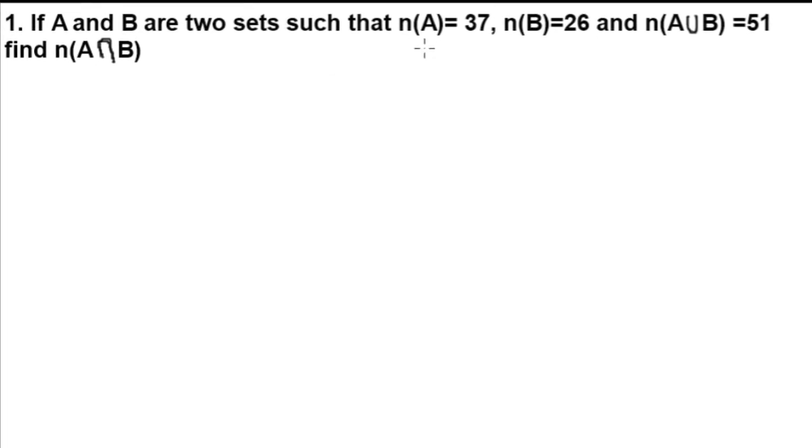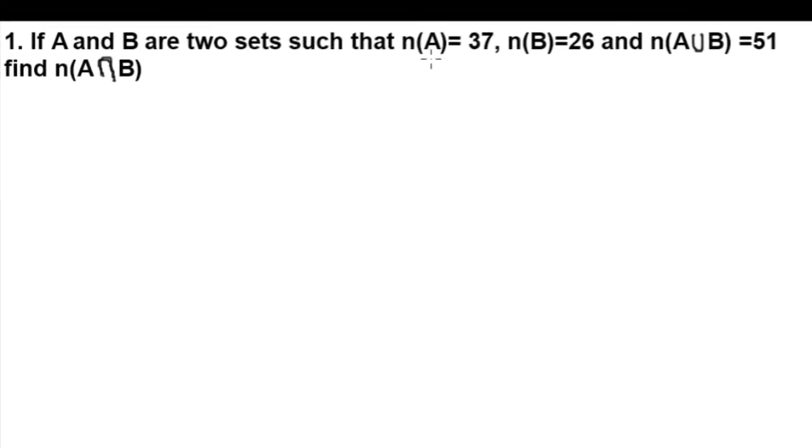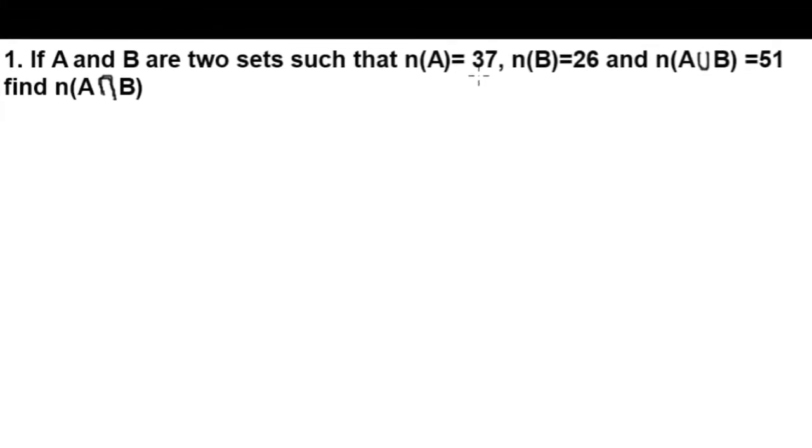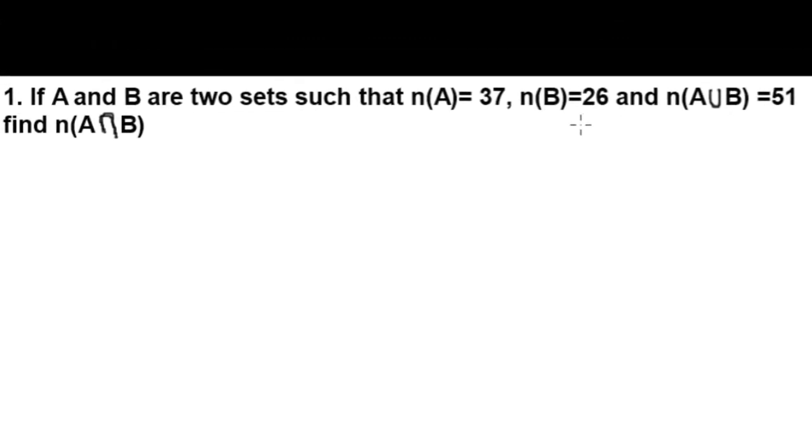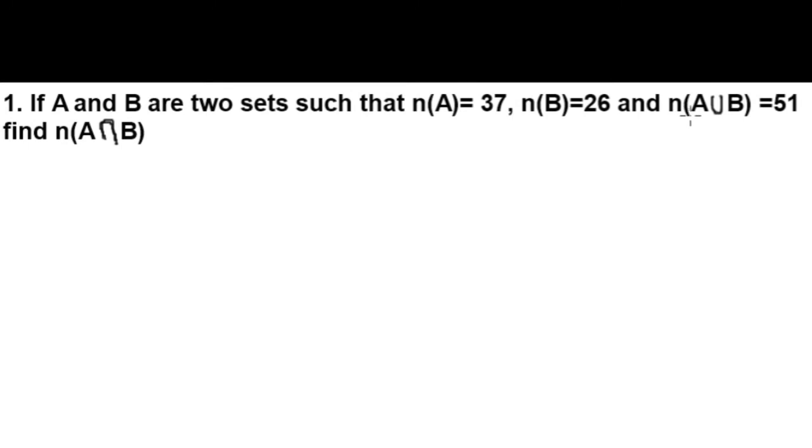Question number 1: If set A and set B are two sets such that n(A) equals 37, n(B) equals 26, and n(A union B) equals 51, then we have to find n(A intersection B).